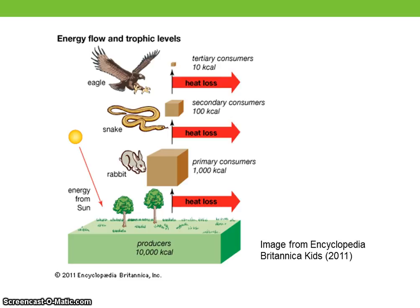Examples of functional types include plants grouped into C3, C4, and CAM photosynthetic pathways, shade-tolerant versus shade-intolerant plants, or reproductive practices of iteroparity versus semelparity.